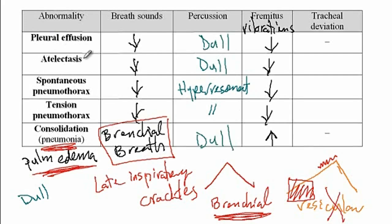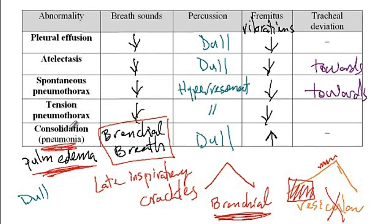With atelectasis, since the lung has collapsed, there is an opening of space, so the trachea deviates towards the lesion side. Same with spontaneous pneumothorax, due to rupture of subpleural blebs, new space opens up, so the trachea again deviates towards the lesion side. Versus tension pneumothorax, where air flows inside the pleural cavity and pushes everything away — for instance with a knife stab into the chest — everything is pushed away, so the trachea is pushed away from the lesion side.